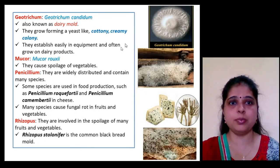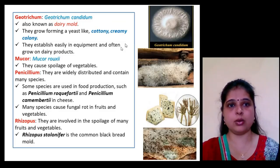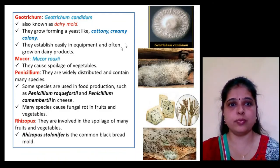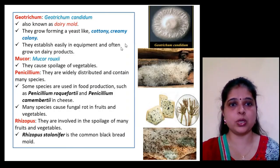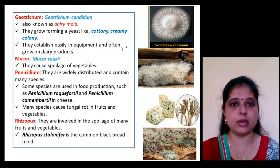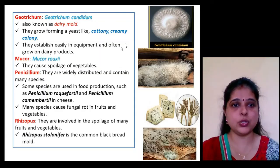Geotrichum is also called the dairy mold — it forms a yeast-like cottony creamy colony and often grows on dairy equipment and dairy products. Mucor causes spoilage of vegetables. Penicillium is widely distributed and contains many species; some are used in food production, such as Penicillium roqueforti and Penicillium camemberti in cheese.